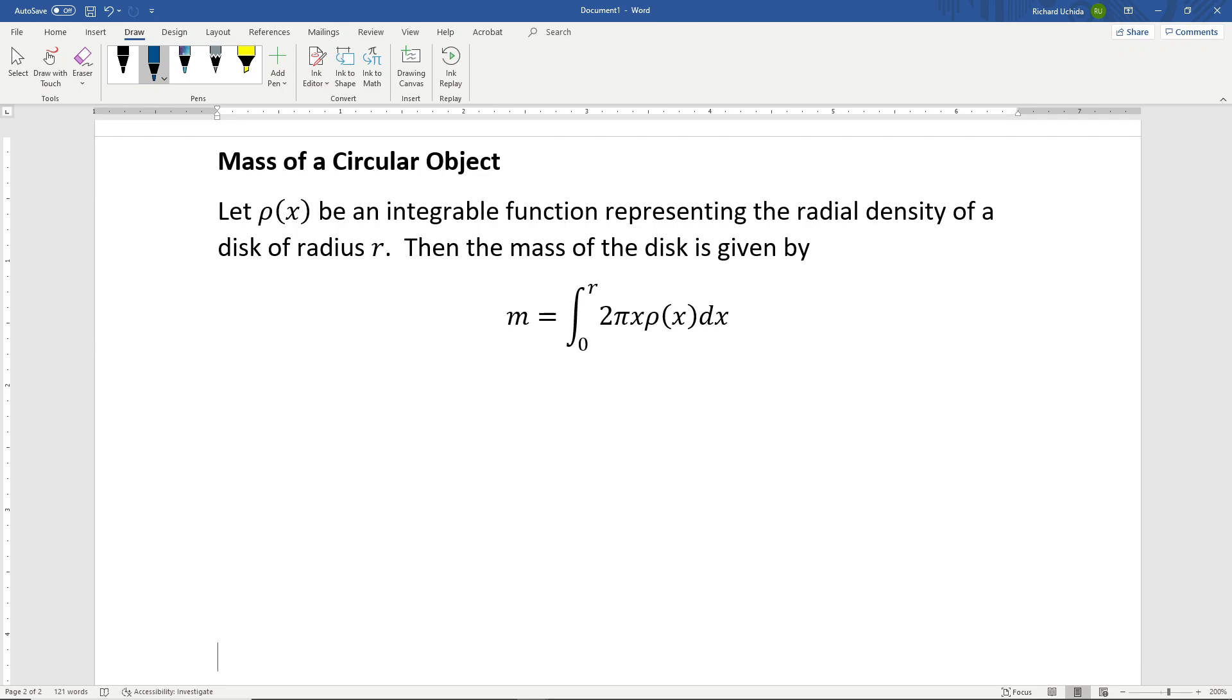For a two-dimensional disk of radius r, we let ρ(x) be an integrable function representing the radial density of the disk. The mass of the disk is given by m equals the integral from 0 to r of 2πx ρ(x) dx.